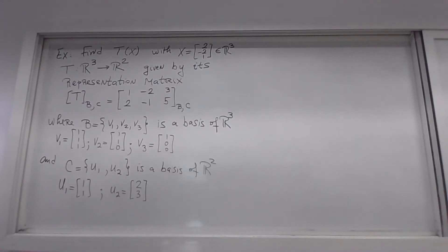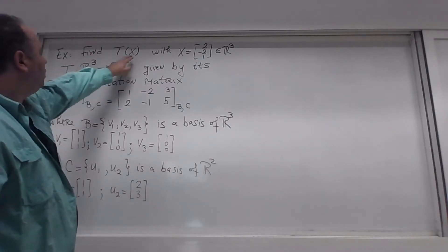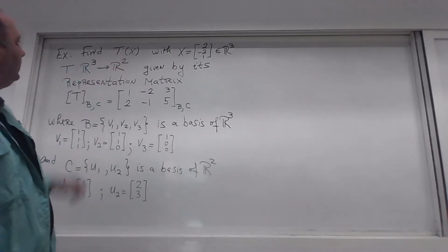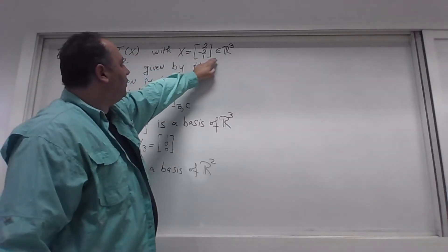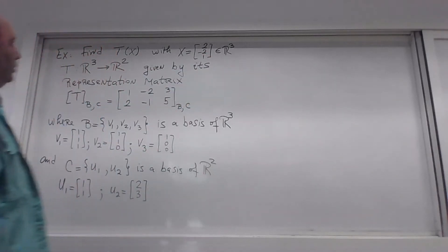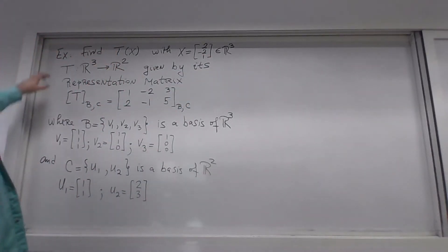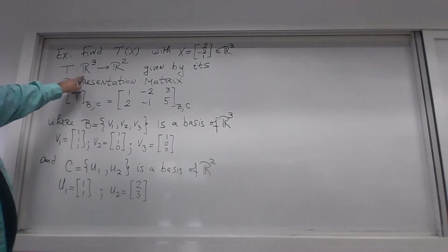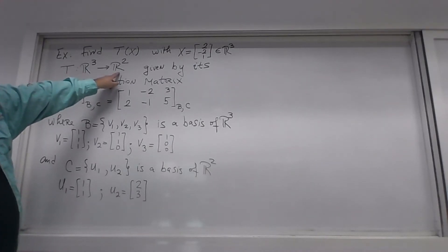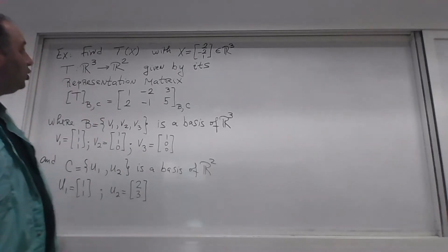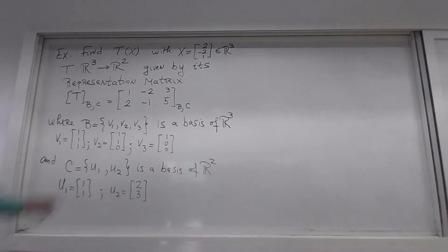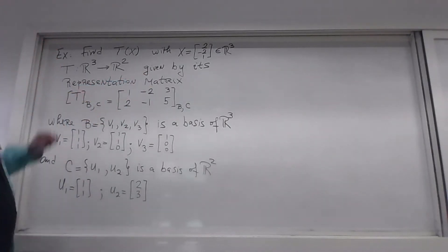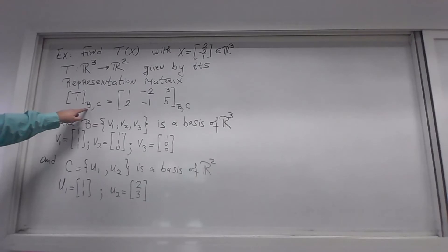Here is another example — this one is even more mysterious. We need to find the image of a vector x under the action of the linear transformation T. x is given as a vector from R3: (3, -2, 1). So we need to find T of x. The linear transformation T works on vectors from R3 and produces vectors in R2, but we don't know what the linear transformation is.